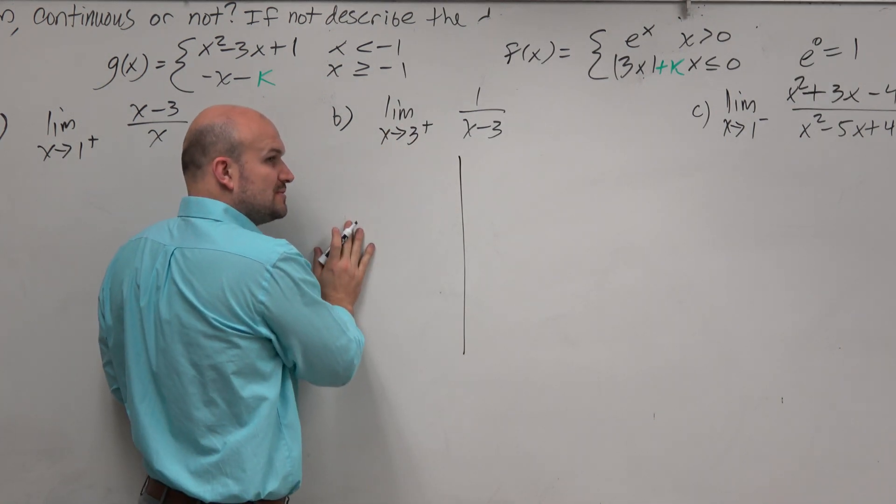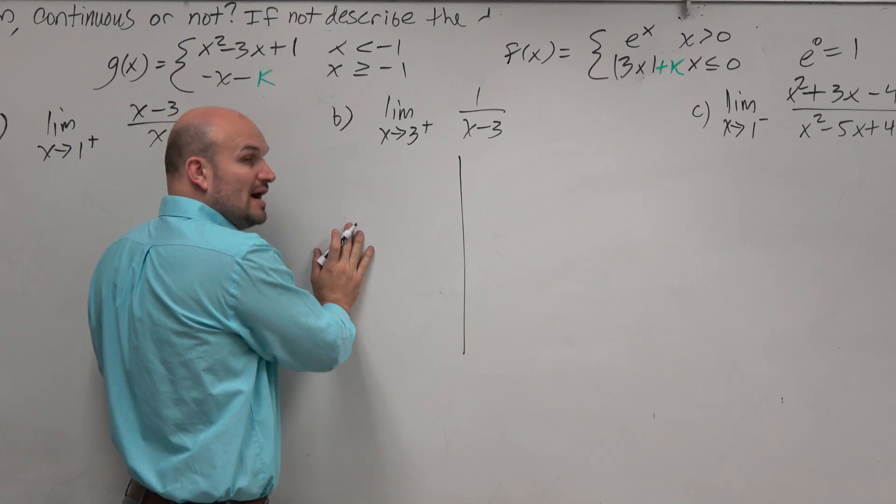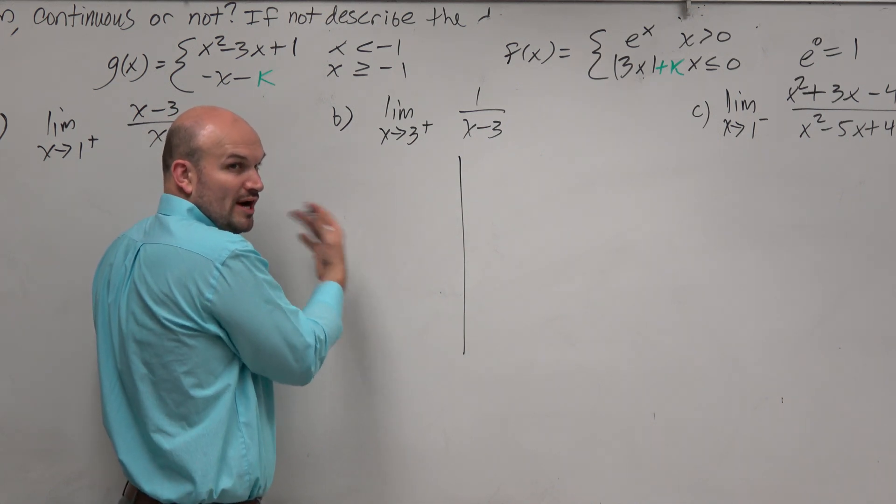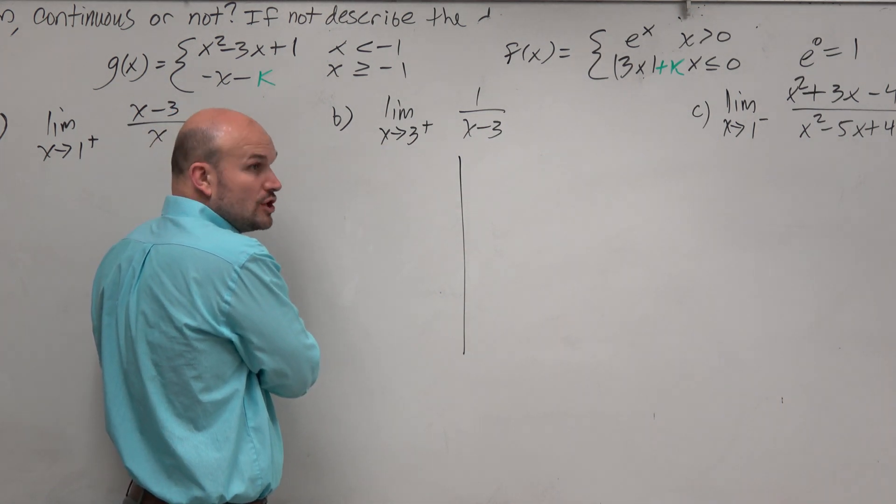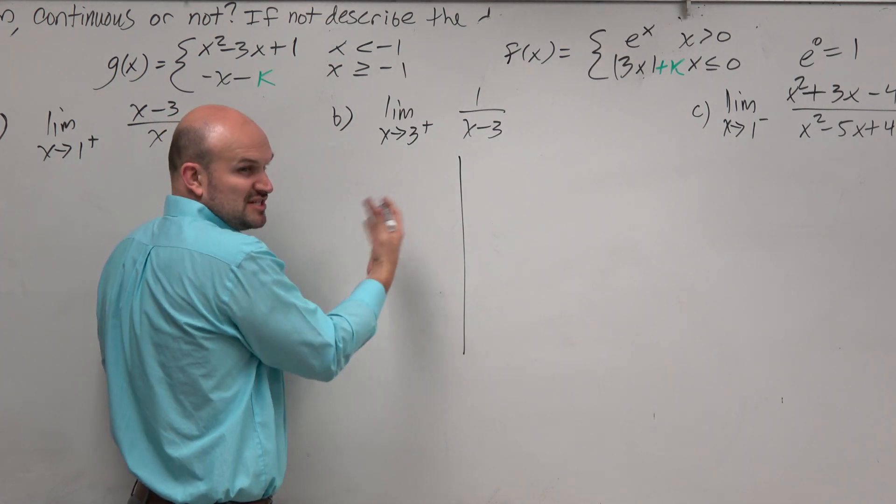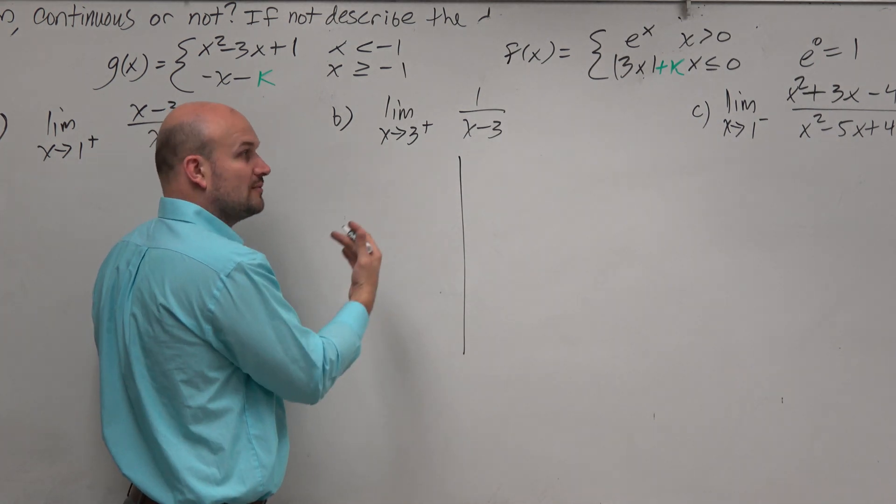Now, since we're identifying the limit from the right, we want to see, can we get a limit more descriptive of where the actual value is going? Because we know the value is going to be an asymptote, which will be undefined. But we want to see, what direction are we going?